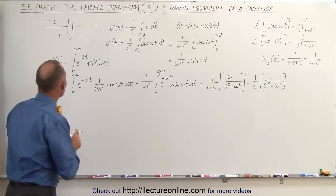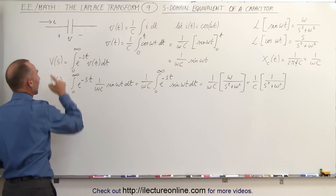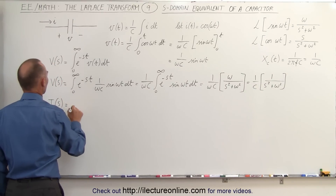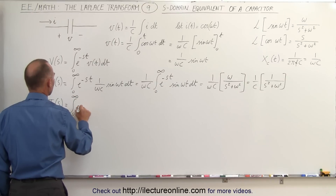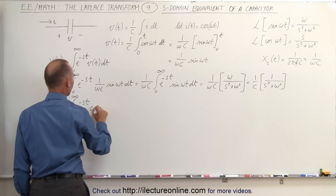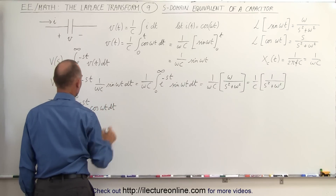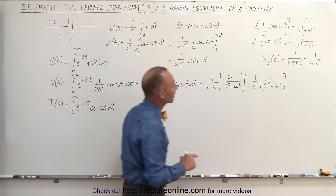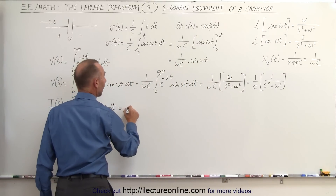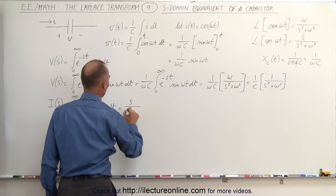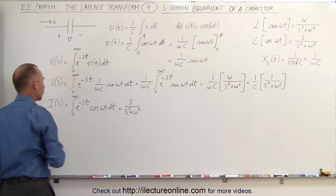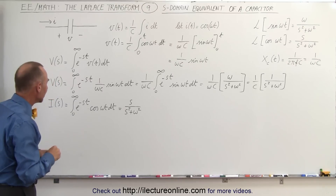Now we're going to do this again, but instead of finding V(s), the voltage across the capacitor in the frequency domain, we're going to find the current I(s). This is equal to the integral from 0 to infinity of e to the minus st times the current with respect to time, which we said was the cosine of omega t, times dt. The Laplace transform of the cosine of omega t is s over s squared plus omega squared. So I(s) equals s over s squared plus omega squared. Now we have the expressions for the voltage and the current across the capacitor in the frequency domain.